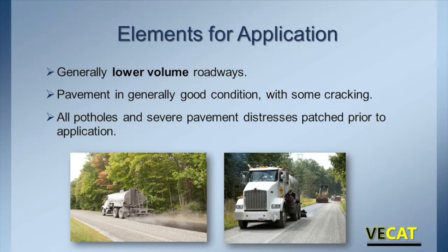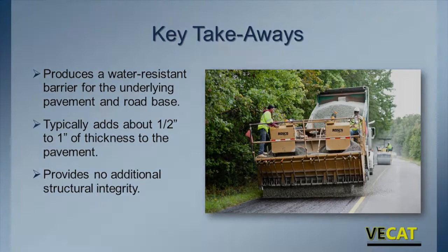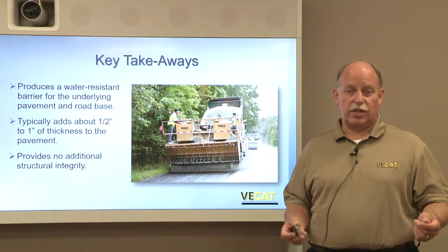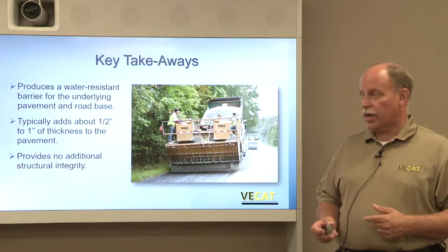The key takeaways from this presentation: First and foremost, recognize this is a preventive maintenance treatment that provides a water-resistant barrier to the underlying pavement structure and subbase — sealing that surface from water intrusion. That's its primary purpose. It's typically going to add somewhere between a half-inch to an inch of thickness to the pavement, but recognize that half-inch to an inch will provide no structural integrity to the pavement. It's not there to provide structure — you cannot put two applications of surface treatment and get yourself an inch or two of additional structure. A surface treatment will not provide structural capacity to a given roadway. Thank you for your time.